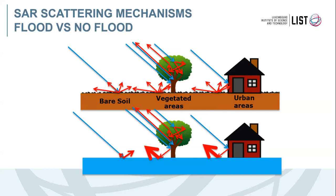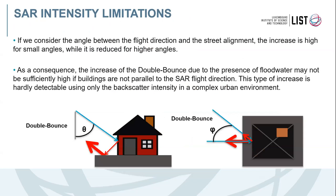However, this increase is not very high because it depends on the geometrical arrangement between the line of sight of the sensor and the building facade. This increase of backscattering is highest when the line of sight of the sensor is orthogonal to the building facade, and decreases as you move away from this orthogonal orientation.